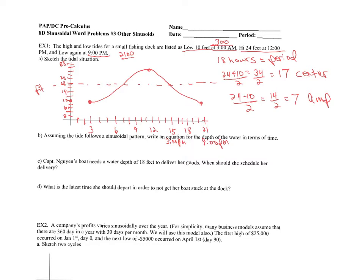Assuming the tide follows the pattern, write the equation for the depth of water in terms of time. We're starting at a low point, so it's going to be negative 7 cosine. B is 2π divided by 18, which is π over 9. Times (x minus 3), because we're not starting at the y-axis — we're starting at 3 for our low point — plus 17.